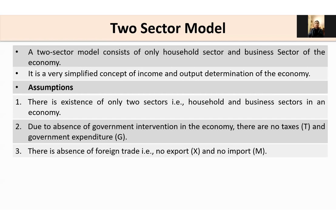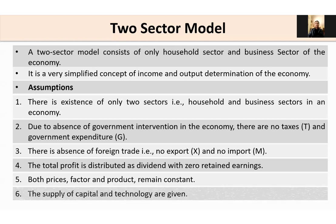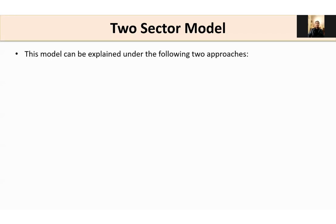There is absence of the rest of the world sector, that is the foreign sector, so there are no exports and no imports in the two-sector model. The total profit is distributed as dividend with zero retained earnings. Both product prices and factor prices are assumed to be constant, and the supply of capital and technology are given.